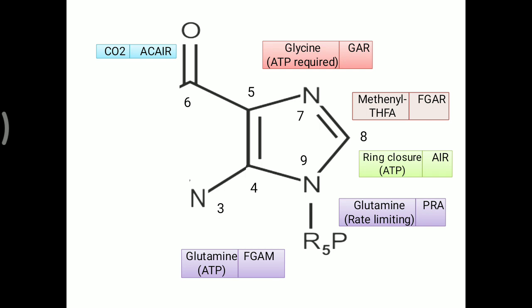Further, aspartate molecule is added, donating one more nitrogen over the purine ring structure. Here nitrogen is added and ATP is needed again. So to summarize: when glycine is added, ATP is needed; when glutamine is added, ATP is needed; ring closure requires ATP; and finally when aspartate is added, ATP is needed again.